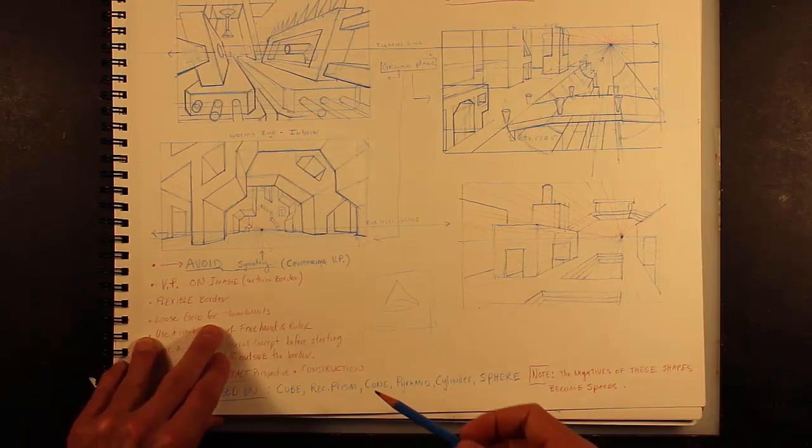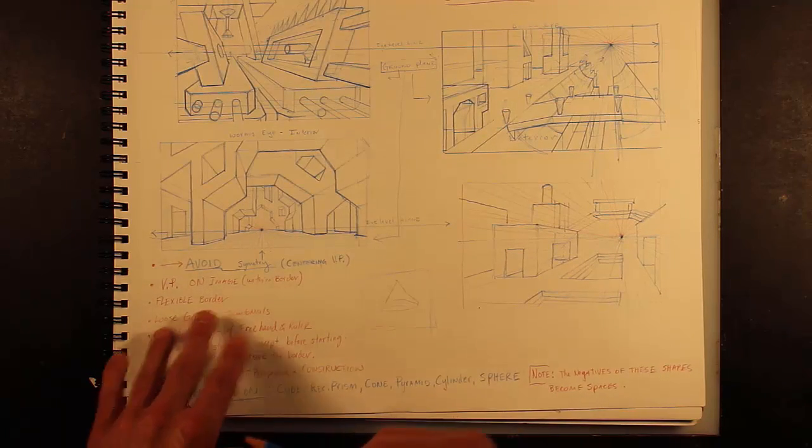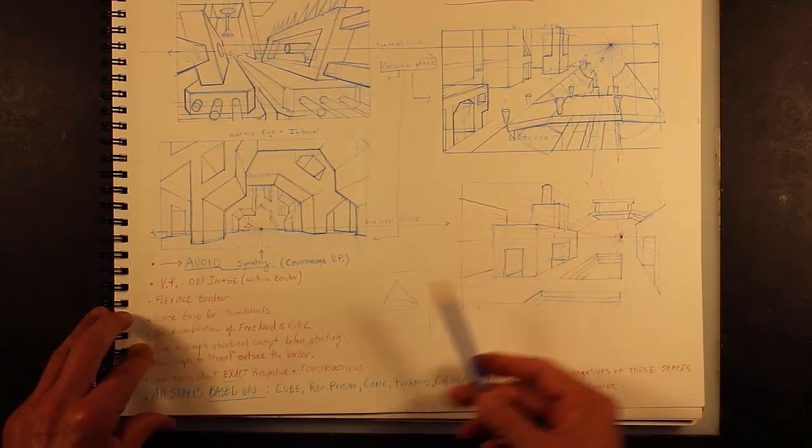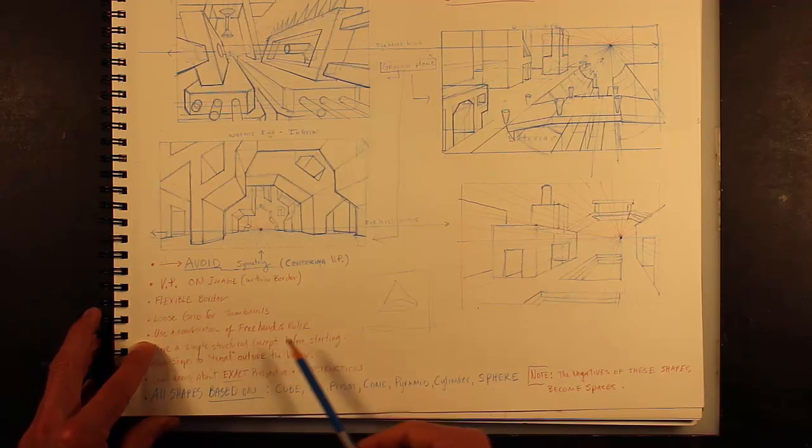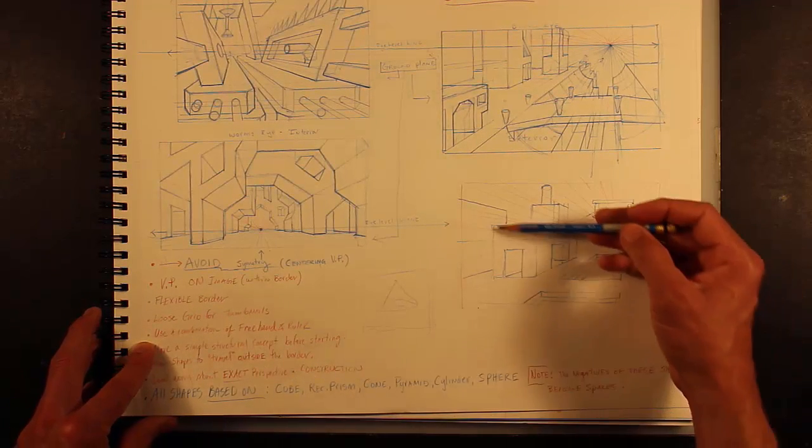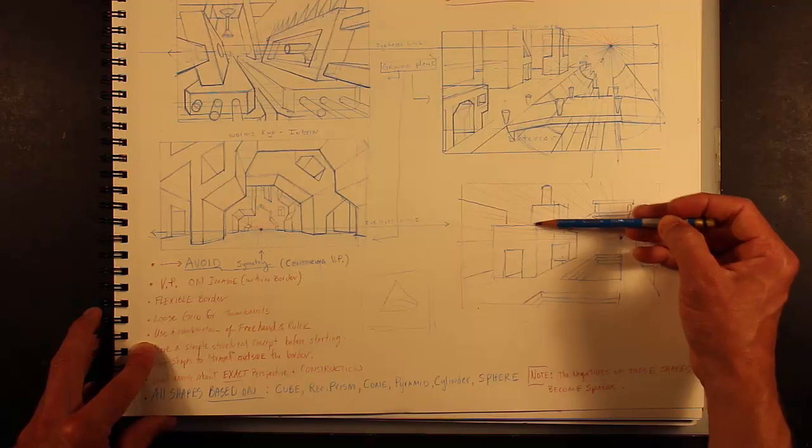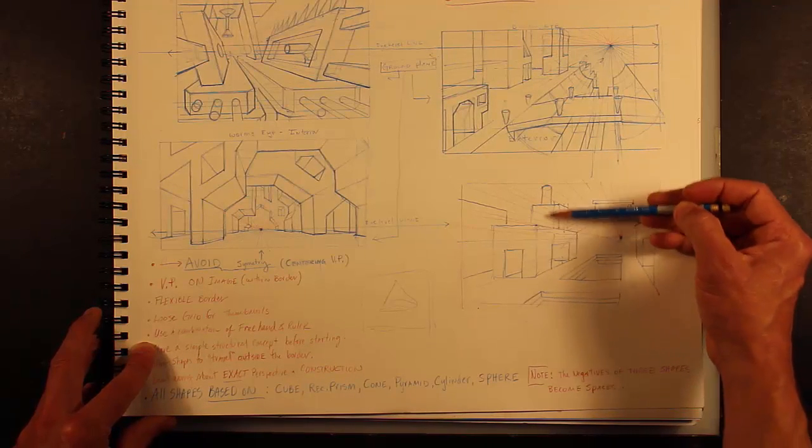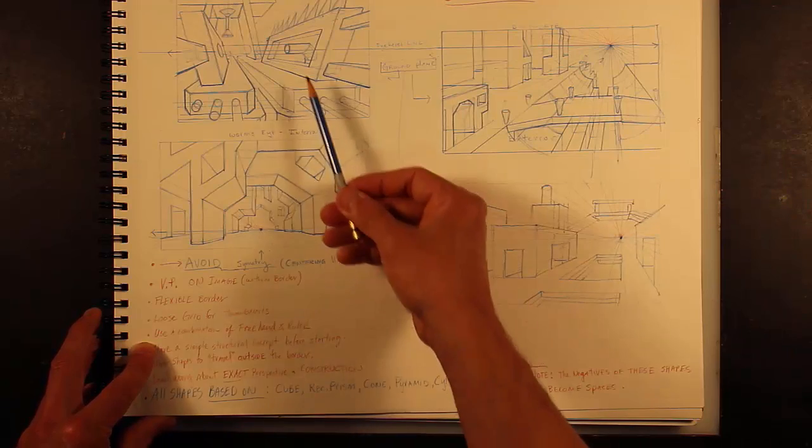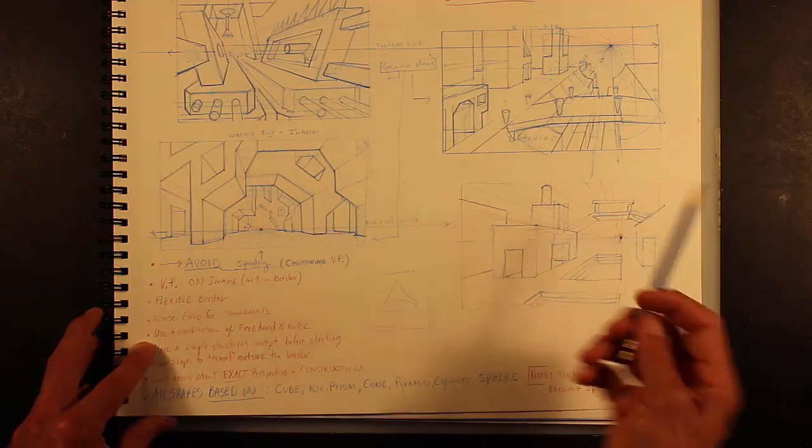It's loose with the grids for the thumbnails. You can use Ruler, but do it not super intense, so I'll show you what I mean. Use a combination of freehand and Ruler. It's nice when you can just draw freehand. And then, as you see here, I started to tighten up with Ruler because I was really into it.